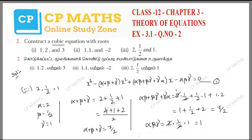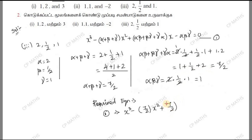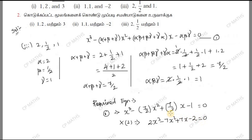Finally, the required equation: x³ minus (7/2)x² plus (7/2)x minus 1 equals 0. Multiplying through by 2: 2x³ minus 7x² plus 7x minus 2 equals 0. This is the required equation.